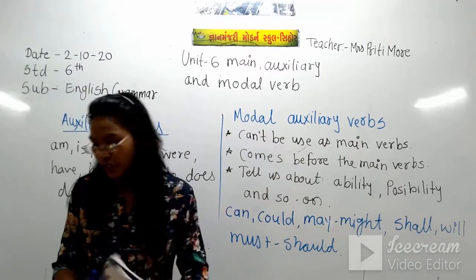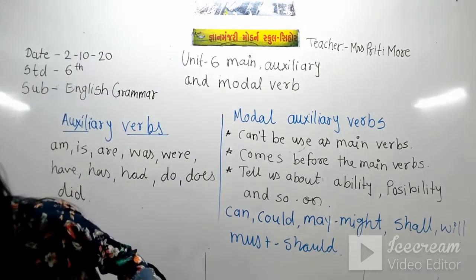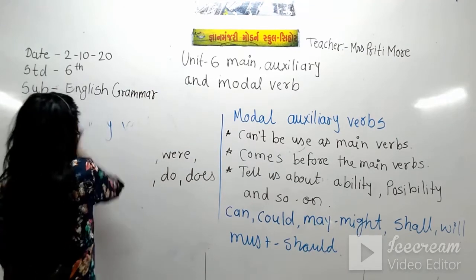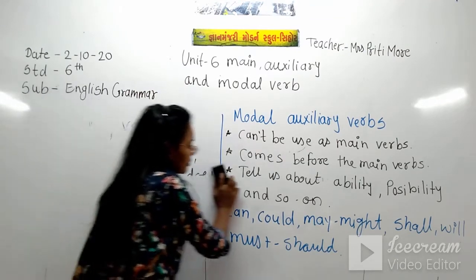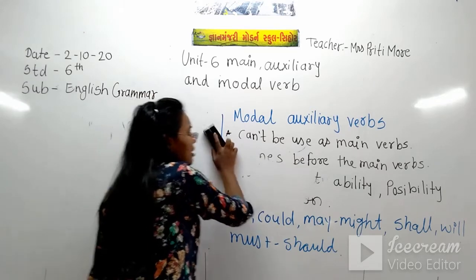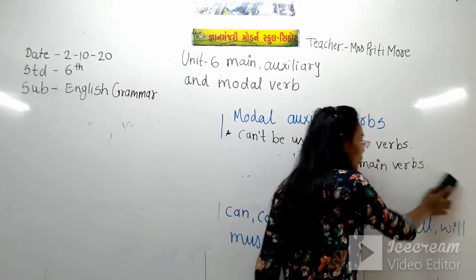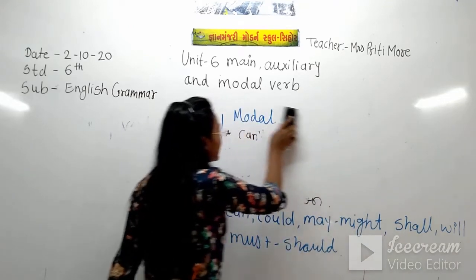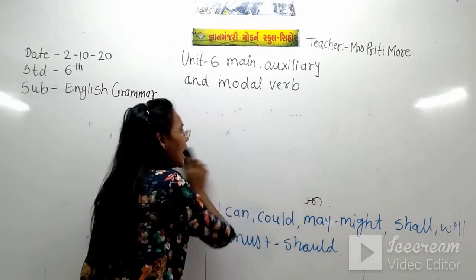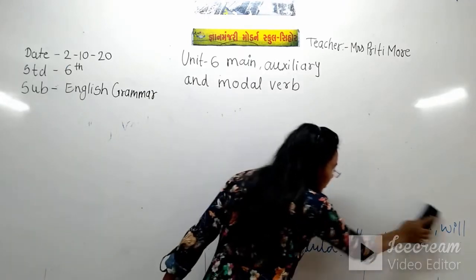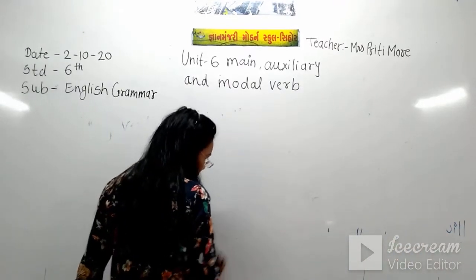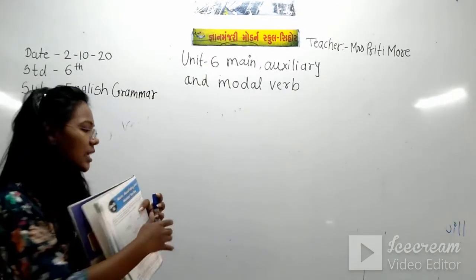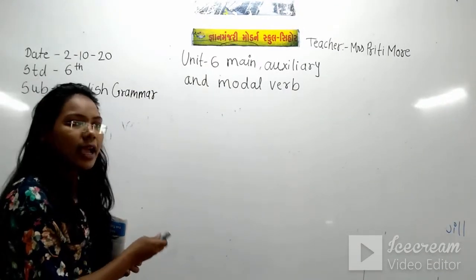I hope students you have written this. Now let's see the examples. A modal auxiliary comes before the main verb. It comes before the main verb and tells us about ability and possibility.